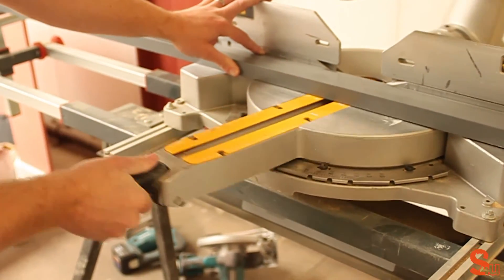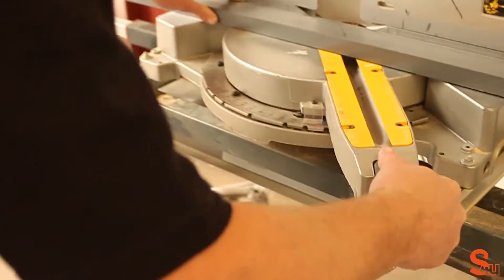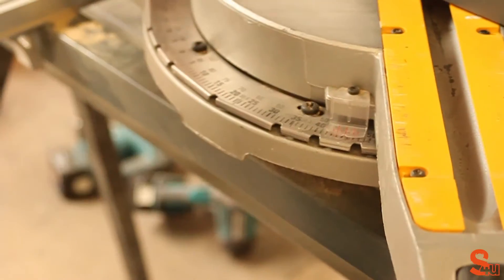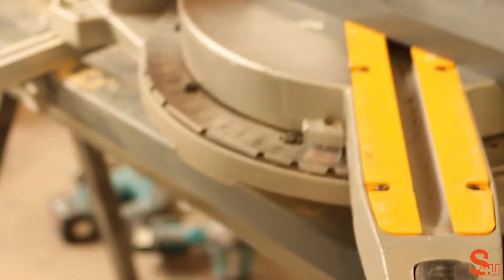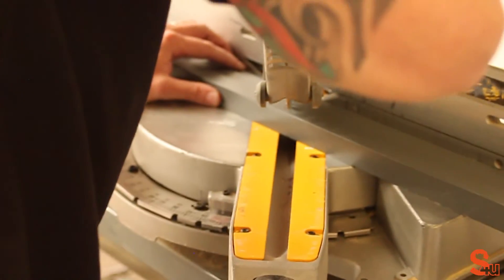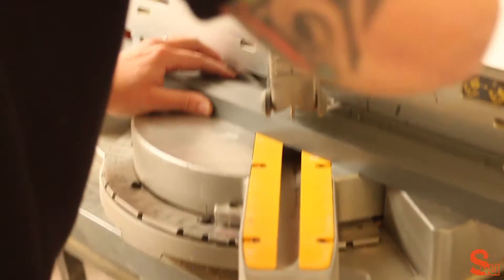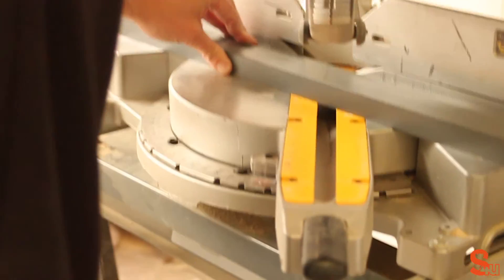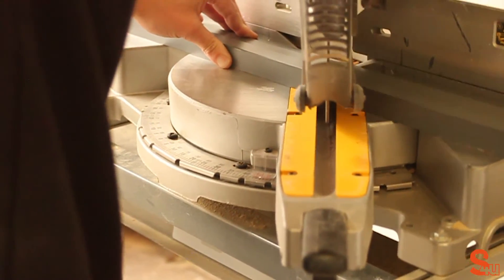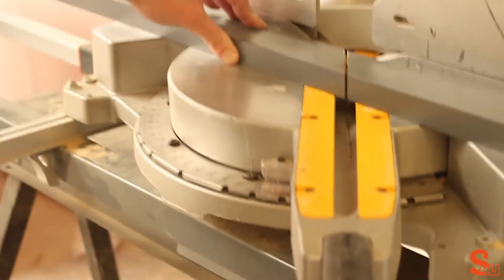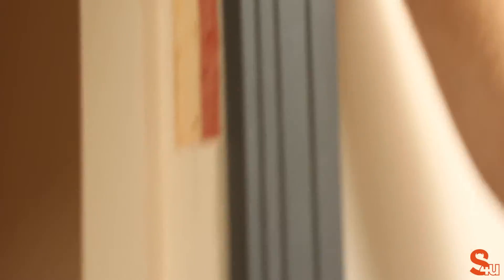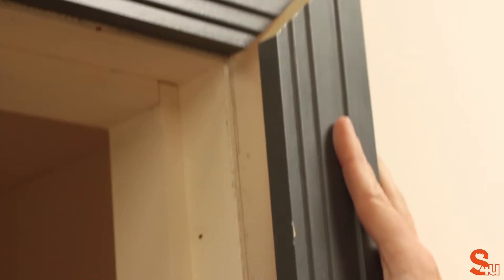Next we set the mitre saw to 45 degrees in the direction that we need to go, and then we make the cut. We take this back and we put it up to make sure it fits correctly across the line.